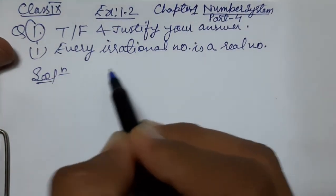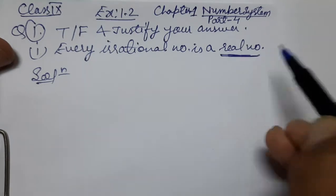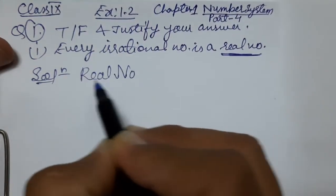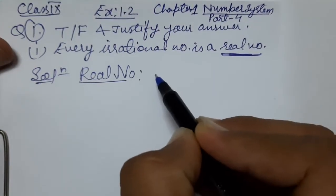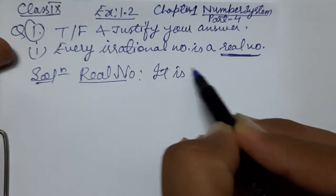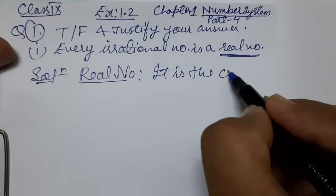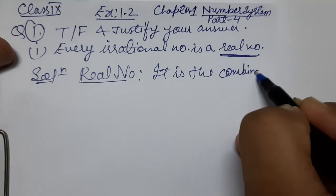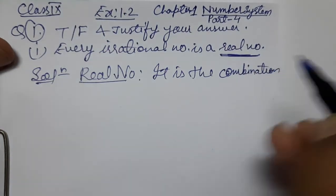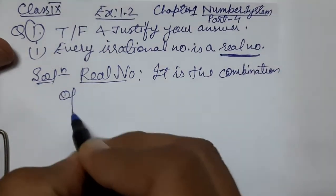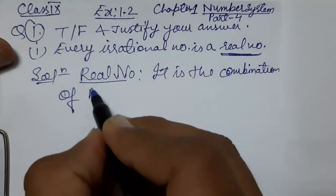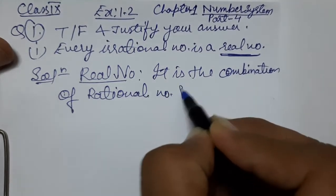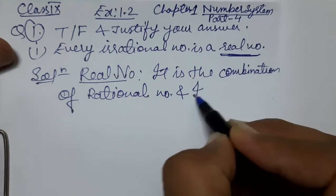First of all, what is a real number? The real number is the combination of rational number and irrational number.